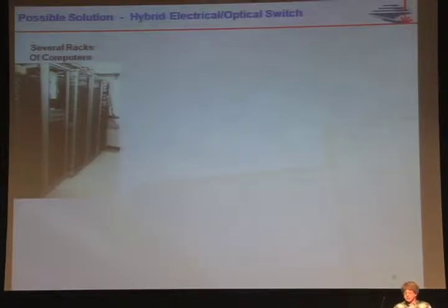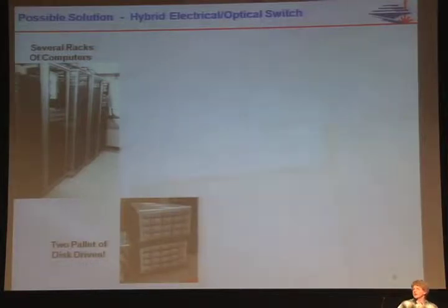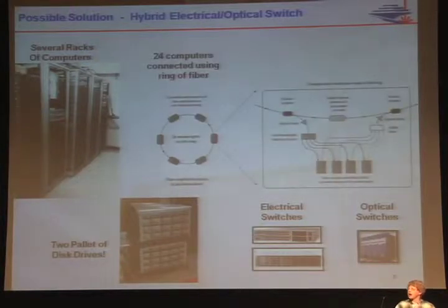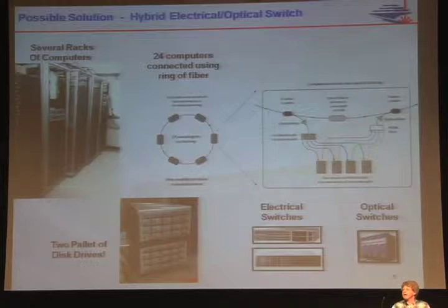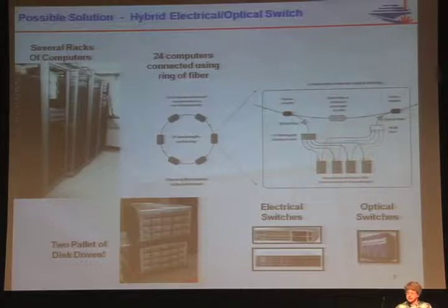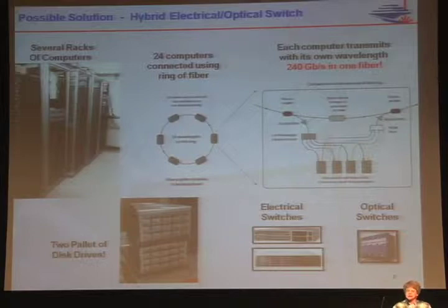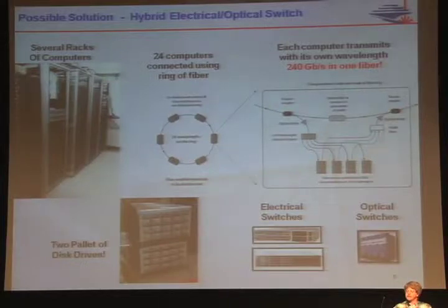We have a collaborative project between ECE and CSE. It involves several racks of computers, two pallets worth of disk drives, electrical switches, and optical switches — a rather unique aspect. In this case, we're wiring up 24 computers using fiber connected in a ring — a ring network running at 10 gigabits per second per computer. Each computer transmits its own optical wavelength, so the total data running around that ring is 240 gigabits per second — middling in terms of what you can actually get on an individual fiber right now.